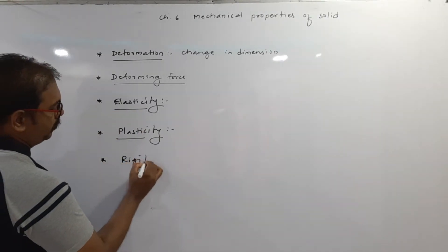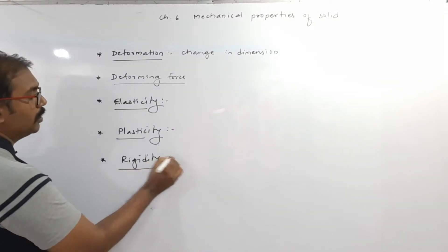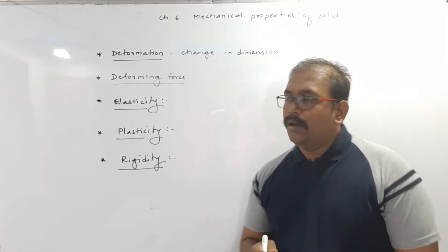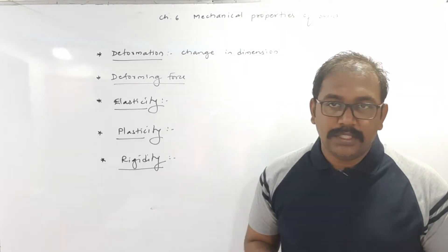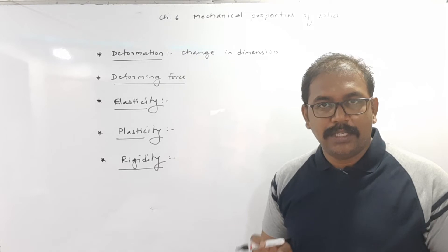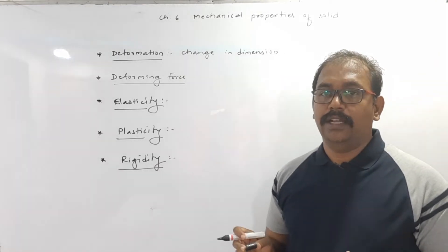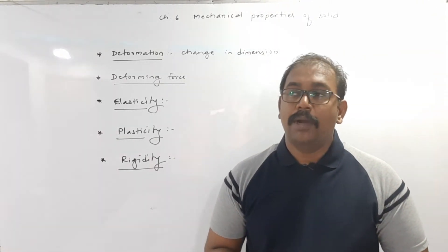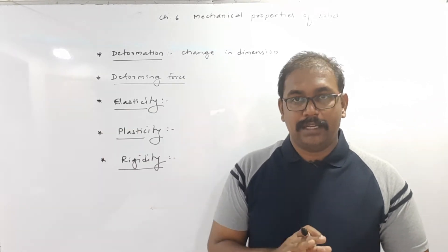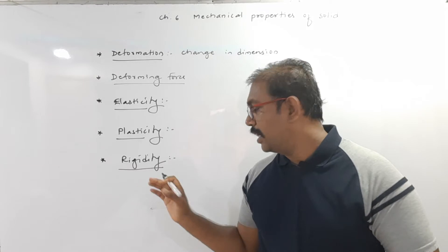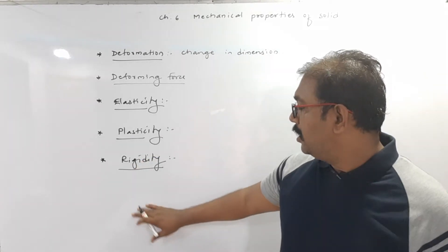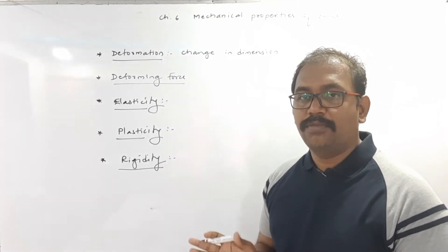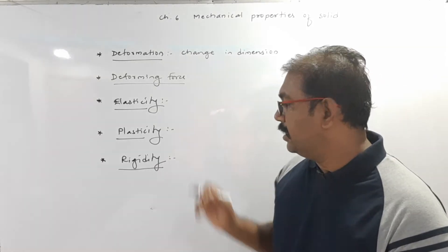The next property is rigidity. Stone is an example of a rigid body. Rigidity means: if you take a stone and apply force, its size and shape do not change. Even if you apply a larger force, its size and shape still do not change. But if you apply a much larger force, at one point it breaks — yet it does not change its size and shape before breaking. That property is rigidity.